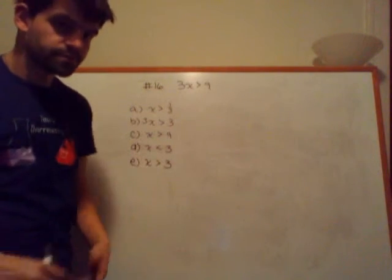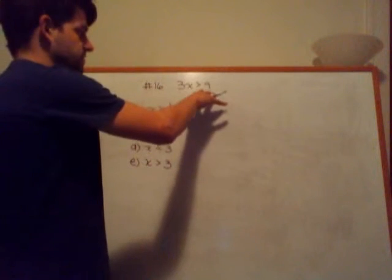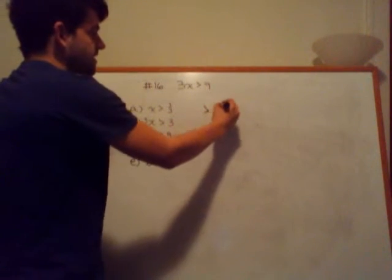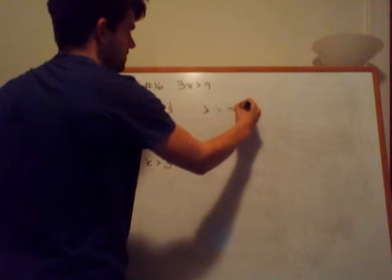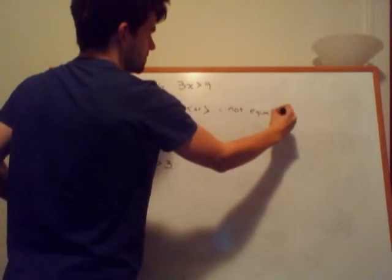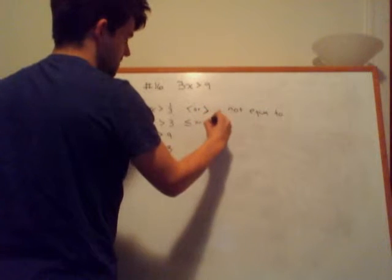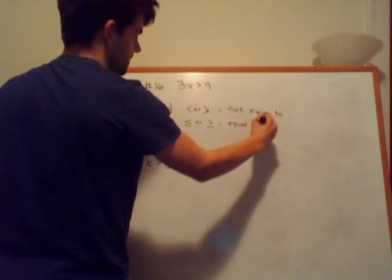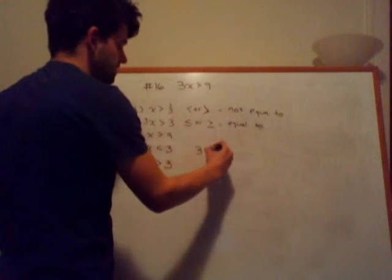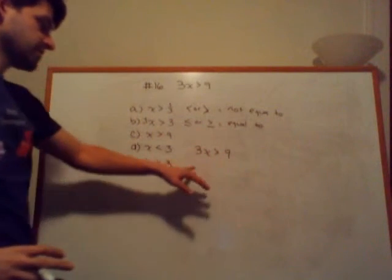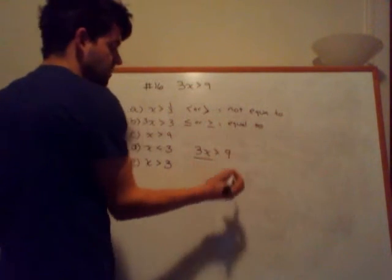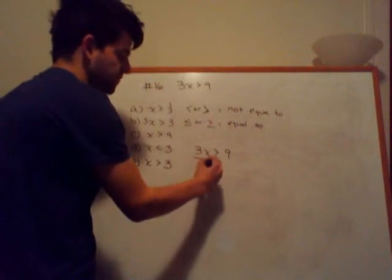For this question, 3x is greater than 9. With inequalities, we can treat them just as if they were equations. All we're doing here is saying that some value of x in this case is greater than some determined value. So remember with the properties of inequalities, if the symbol does not have a sign under it, it means that it's not equal to. And the sign likewise does mean that it's equal to with its corresponding symbol as well.